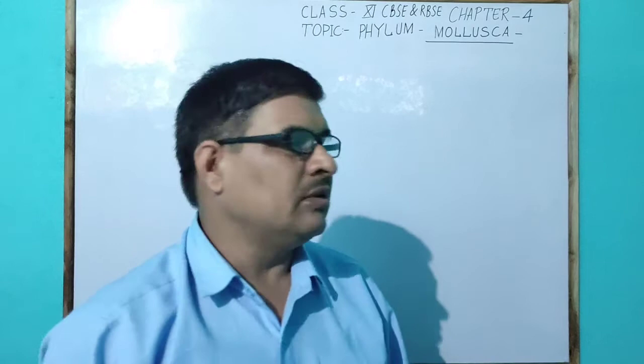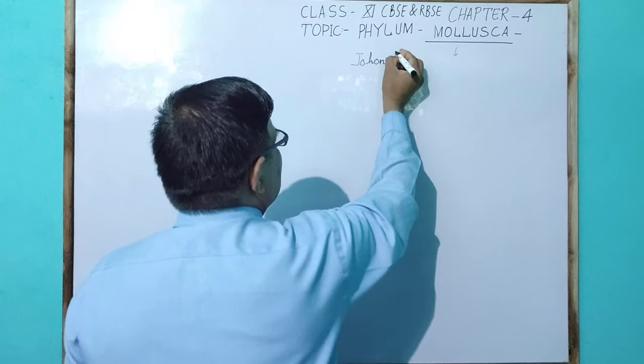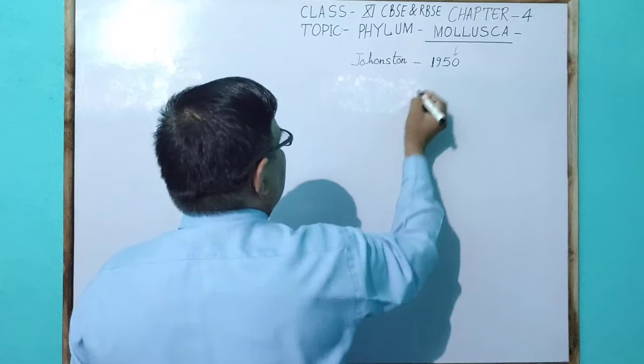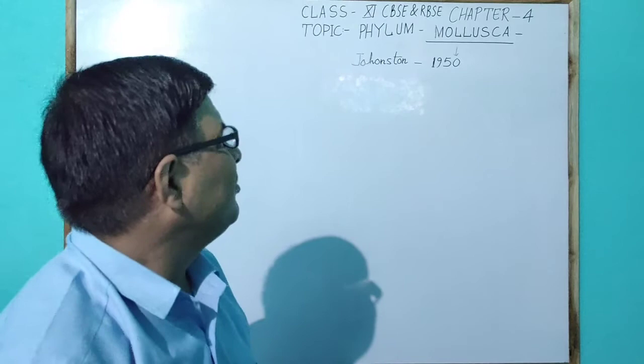The term Mollusca was first used by a scientist, Johnston, in 1950. Generally, all the animals in Mollusca have a soft body.